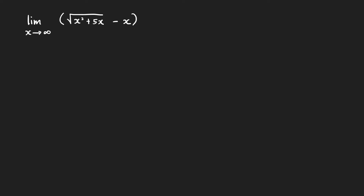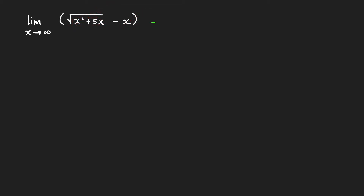Next problem: let's evaluate the limit of √(x² + 5x) - x as x approaches infinity. As x approaches infinity, √(x² + 5x) goes to infinity and x goes to infinity, so our limit has the form infinity minus infinity. One strategy for evaluating this kind of limit is rationalization — removing radicals. We treat the expression as (√(x² + 5x) - x) over 1 and remove the radical in the numerator.